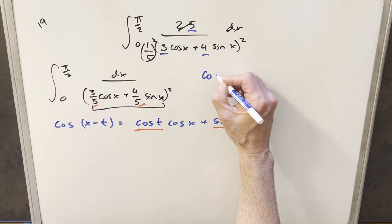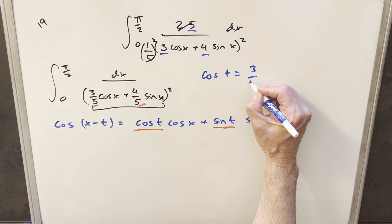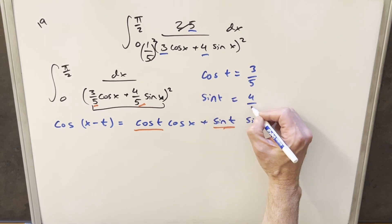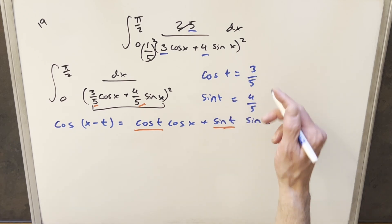So we can kind of capture that over here. We can write cosine t equal to 3 over 5, sine of t equal to 4 over 5. And then with that, we could put sine over cosine.